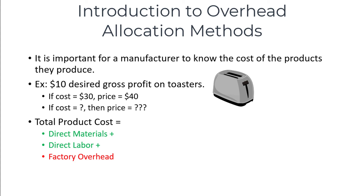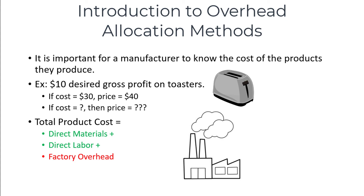If you have one factory where you manufacture eight different products, how would you determine what share of the factory rent should be allocated to each product? What about the wages of the supervisor who is responsible for workers on all eight product lines? His or her wages should be part of the cost to create these products, but how much of the cost should go to each product? These are hard questions to answer, and there are many different approaches to answering them.